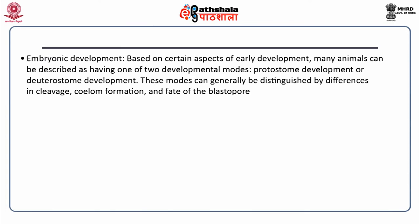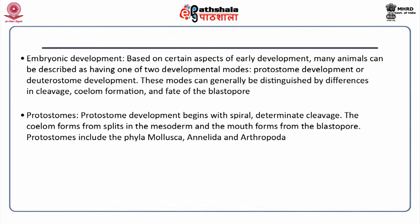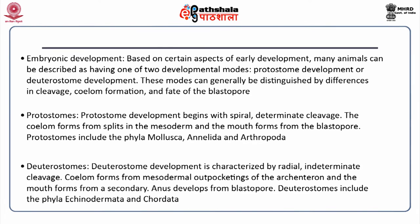Based on embryonic development, many animals can be described as having one of two developmental modes: protostome development or deuterostome development. These modes can be distinguished by differences in cleavage, coelom formation and fate of the blastopore. Protostome development begins with spiral determinate cleavage; the coelom forms from splits in the mesoderm and the mouth forms from the blastopore. Deuterostome development is characterized by radial indeterminate cleavage; the coelom forms from mesodermal outpocketing of the archenteron, the mouth is formed secondarily, and the anus develops from the blastopore.